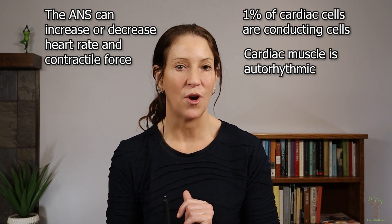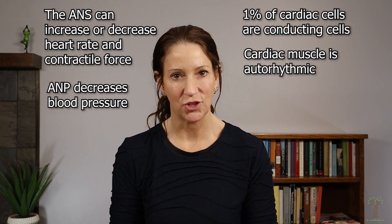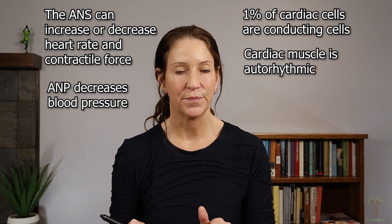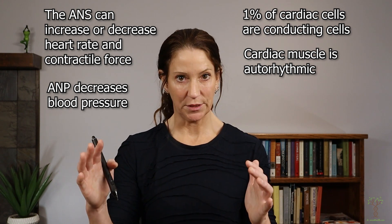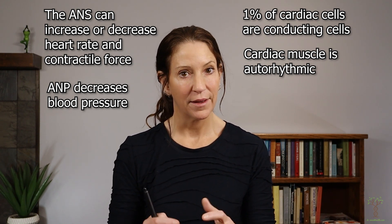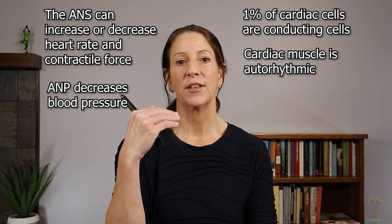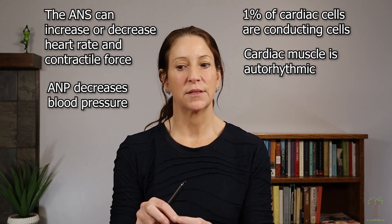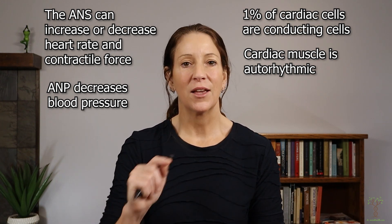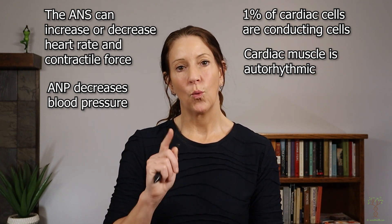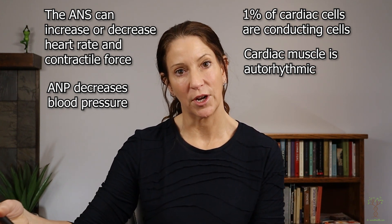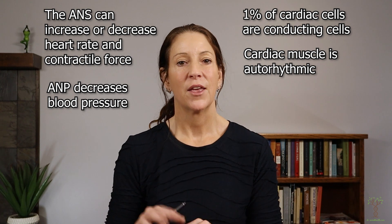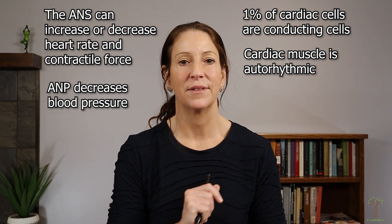The heart also makes a hormone called atrial natriuretic peptide (ANP), released from atrial cells in response to changes in blood pressure. When blood pressure increases and is too high, it causes the atria to stretch, stimulating ANP release, which overall decreases blood pressure. ANP targets the kidneys, telling them to excrete sodium, which pulls water with it — so we urinate more — and reduced blood volume results in lower blood pressure. Other hormones do the opposite, and we'll discuss those in another video.